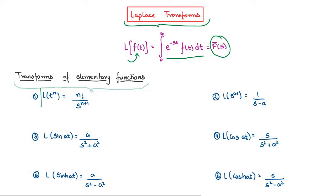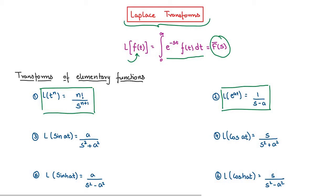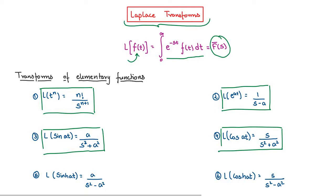Now let us see the transforms of some basic functions. The Laplace transform of t to the power of n is equal to n factorial divided by s to the power of n plus 1. The Laplace transform of e to the power of at is equal to 1 by s minus a. The Laplace transform of sin at is equal to a by s squared plus a squared, and the Laplace transform of cos at is equal to s by s squared plus a squared.